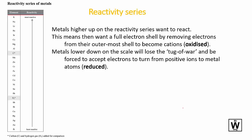Focusing on the activity series reactivity table in your data booklet: the most reactive metals are the ones trying to get a full electron shell, while less reactive ones are less capable of giving up electrons. It's basically a tug of war — reactive metals release their electrons most easily. Metals high up the reactivity series want to react, so they lose their electrons and are oxidized. The ones lower down are reduced because they gain electrons in the tug of war.